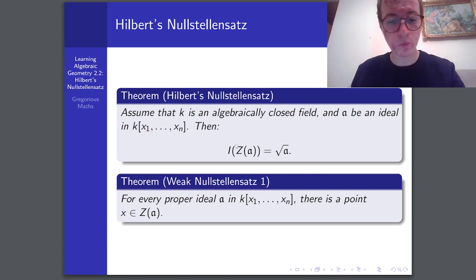And, the weak Nullstellensatz. Now, it's called the weak Nullstellensatz, but I believe that it's equivalent, via some sorcery. I think known as the Rabinowitsch Trick. Something like that. And the weak Nullstellensatz says that for every proper ideal a, z of a is non-empty. Now, we're going to investigate this weak Nullstellensatz a little bit more.